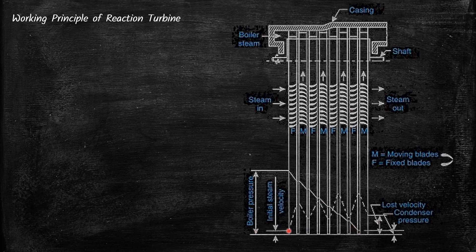Regarding velocity: velocity will increase in the fixed blades. In the reaction turbine, the fixed blades act like a nozzle — similar to the function of a nozzle in an impulse turbine. In the reaction turbine we don't use nozzles; we use only fixed blades. As the steam flows through the fixed blades, it expands and its velocity increases.